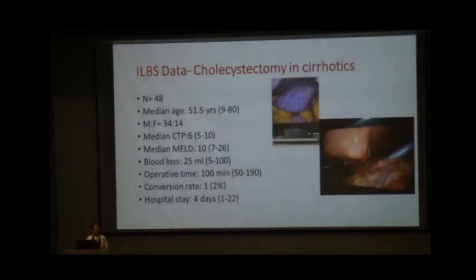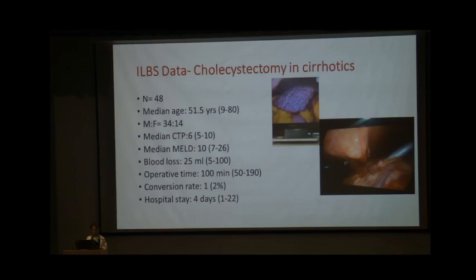Our own institutional data from the last 12 years includes 48 cirrhotic patients operated. Median age was 51 years, predominantly male, with median Child score of 6 and median MELD of 10 (range 7–26). There was no significant blood loss, most patients were operated in under 2 hours, with one conversion (approximately 2%), and postoperative hospital stay averaging 4 days (range 1–22 days). Intraoperative photographs demonstrate the cirrhotic liver appearance and the collateral vessels with adhesions to the anterior abdominal wall.